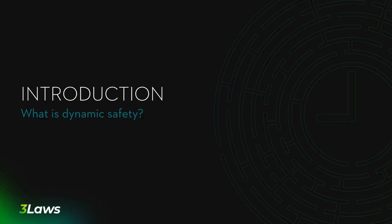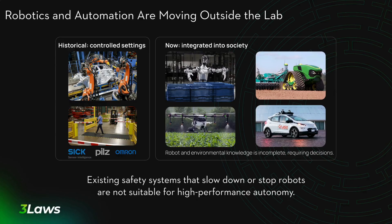Let's start with answering the question of what dynamic safety is and what Three Laws does. In order to understand dynamic safety, we must go to the root of the problem. As the world moves from machine automation to intelligent autonomy, the types of systems and the environments that they are deployed in are changing rapidly. Robots are required to interact more with people and other robots, and environments are becoming more dynamic and uncertain.